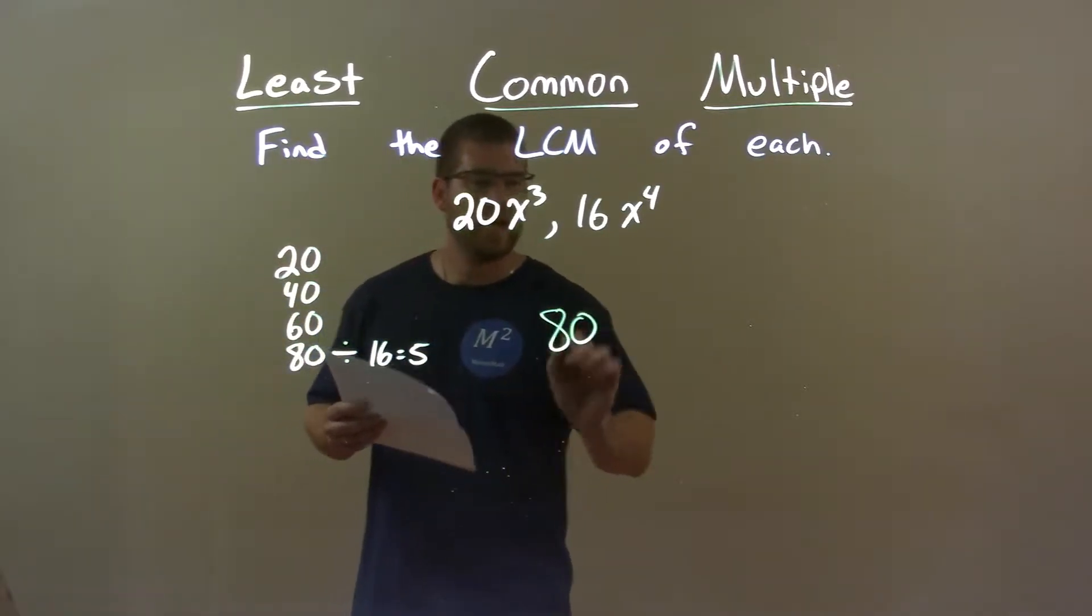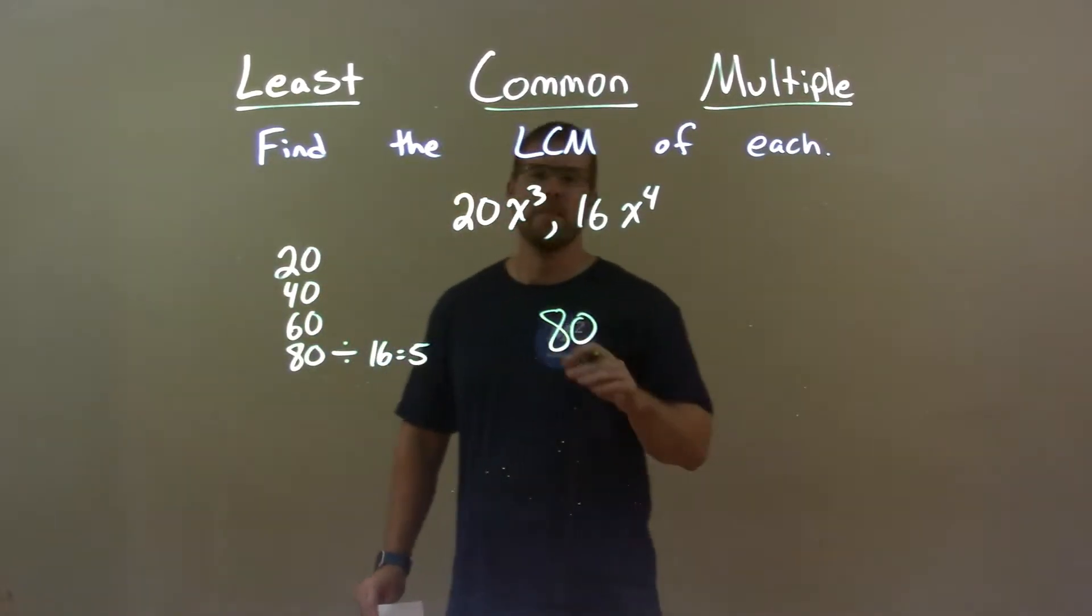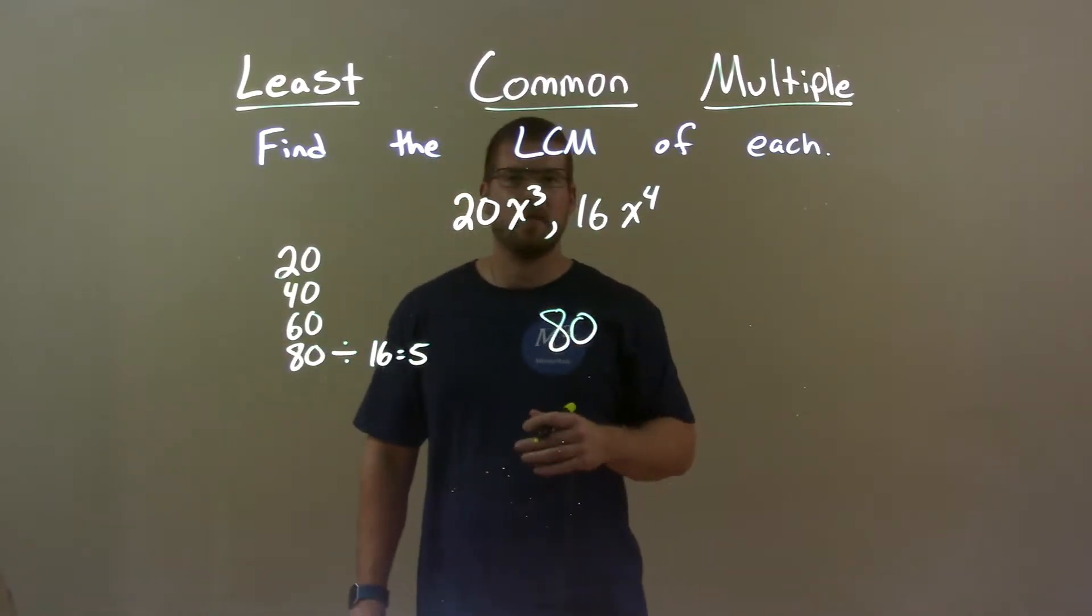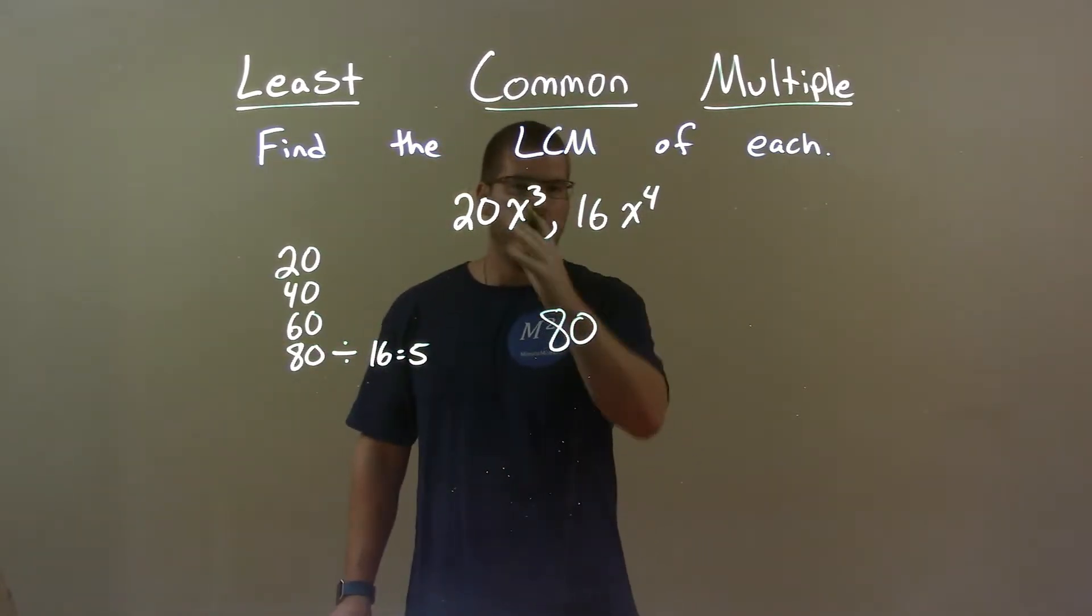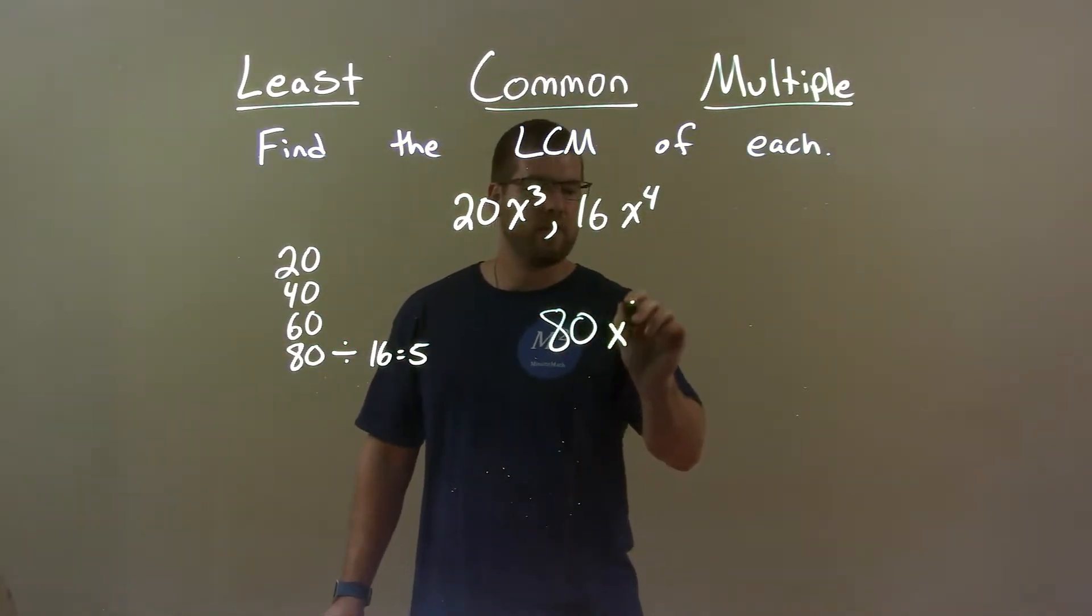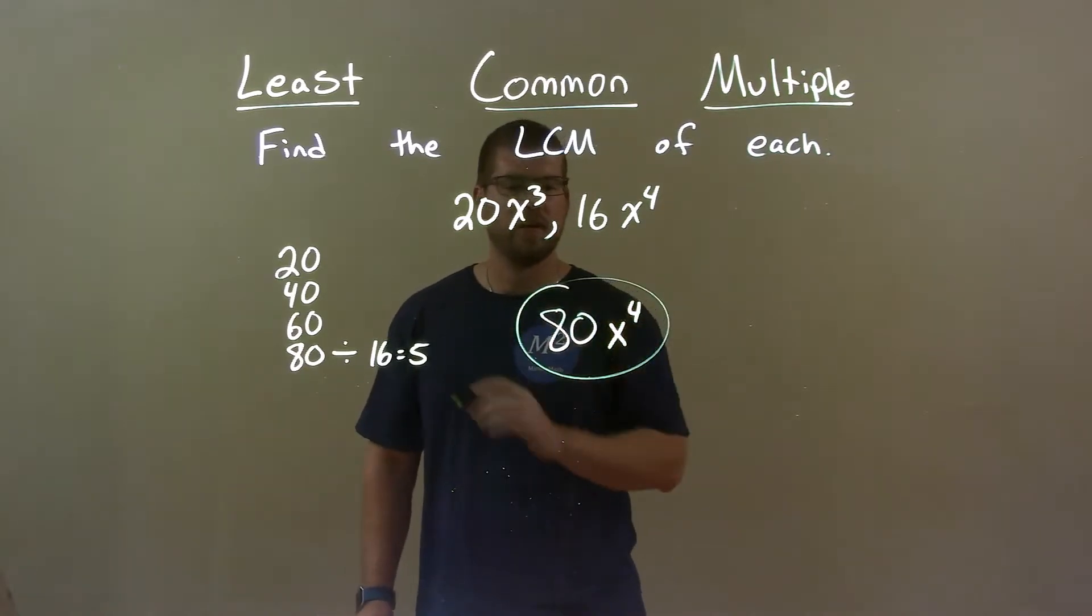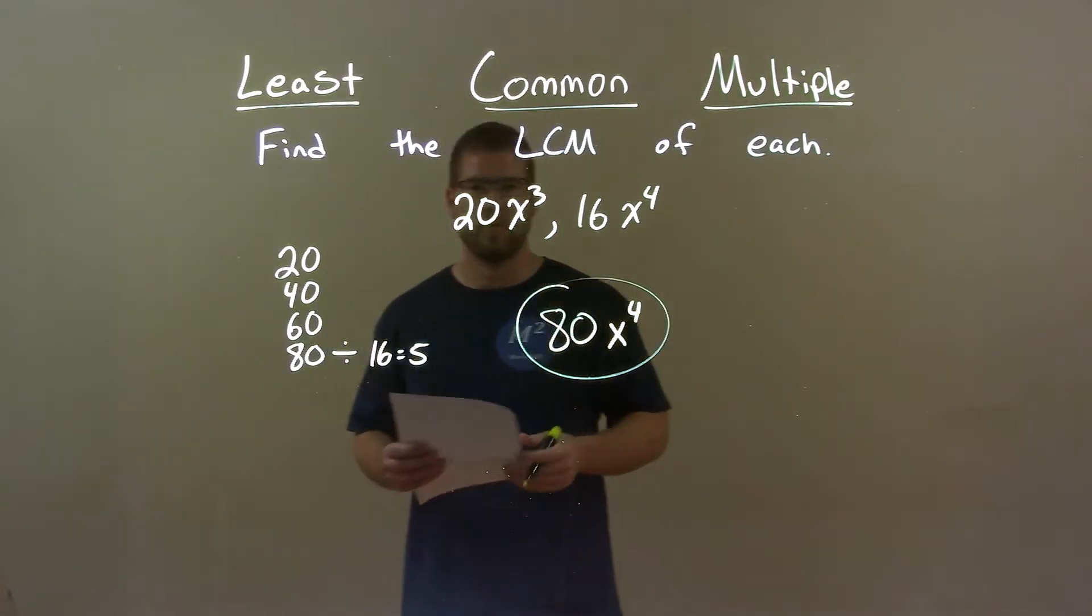So my number here that I need is 80, but now I have to deal with the variables. Well, I have 3x's here and 4x's there. I got to encompass all the most I can so it's x to the fourth power, and so my final answer here is 80x to the fourth power.